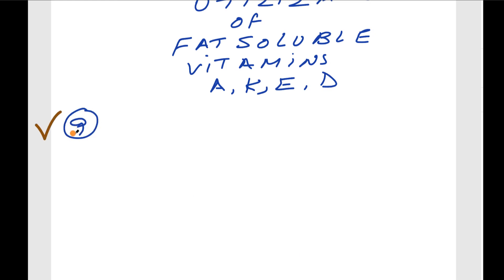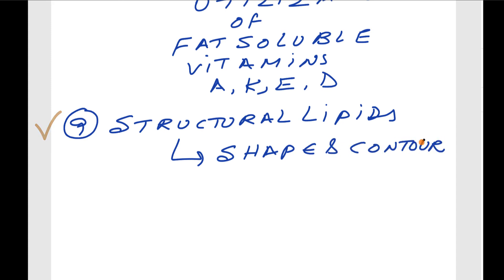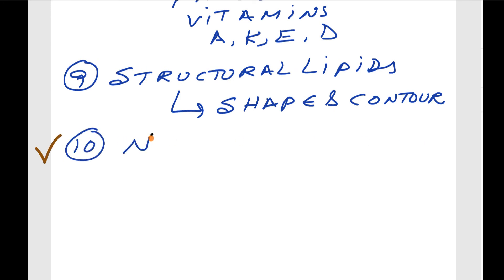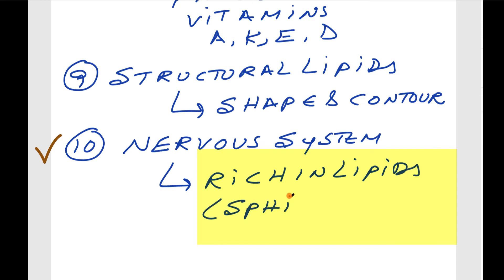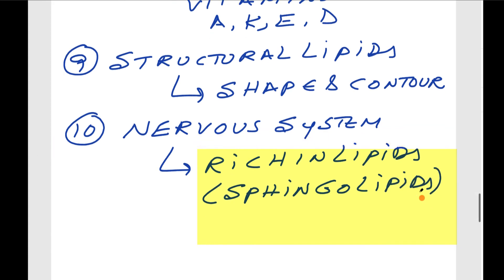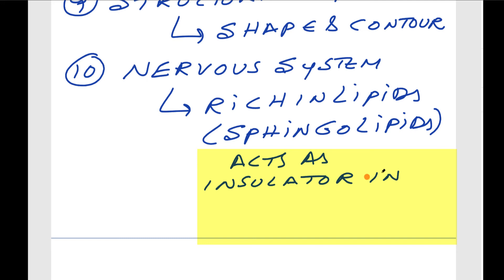Structural lipids such as phospholipids and triacylglycerol give shape and contour to the body. The nervous system is rich in lipids — a group called sphingolipids, containing sphingol as alcohol, acts as insulation in the myelin sheath.